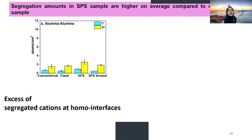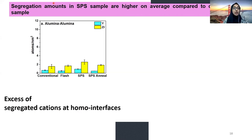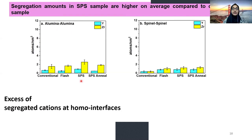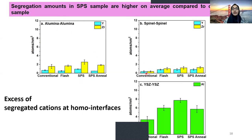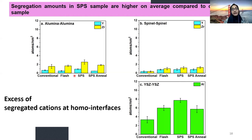We also performed quantification through grain boundary excess, reporting atoms per nanometer squared for the homo interfaces across conventional, flash, and both SPS samples. The trends are the same as in the atomic percent results since the same grain boundaries are used for analysis. Again, the SPS sample is clearly higher on average compared to the conventional sample, and the flash and SPS annealed samples have similar grain boundary segregation.